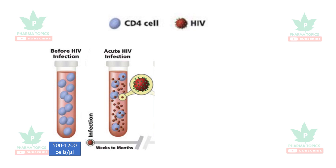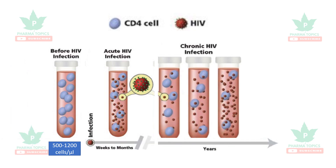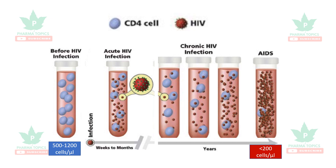As the disease progresses into chronic HIV infection over the years, the CD4 count gradually decreases while the HIV titer increases gradually. It reaches a stage where the CD4 cells become less than 200 cells per microliter, and that condition is called acquired immunodeficiency syndrome.